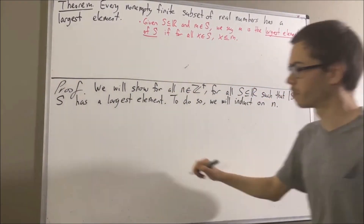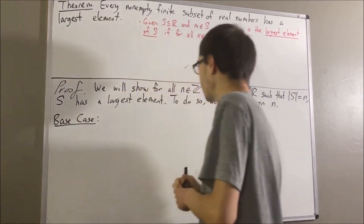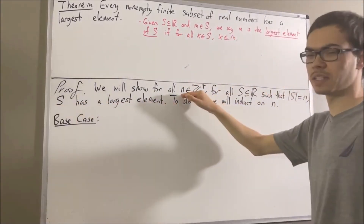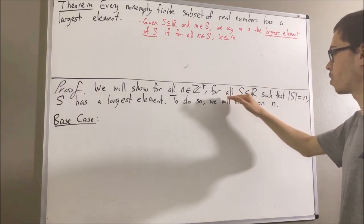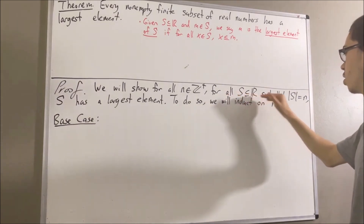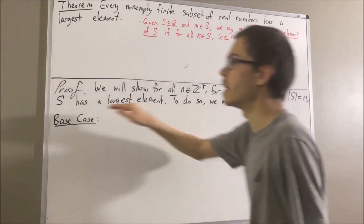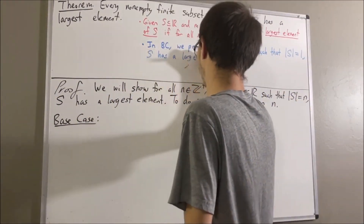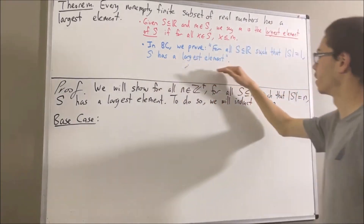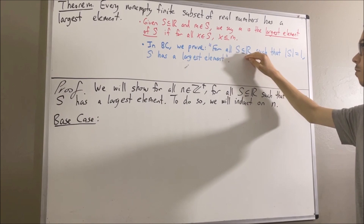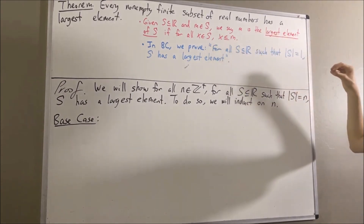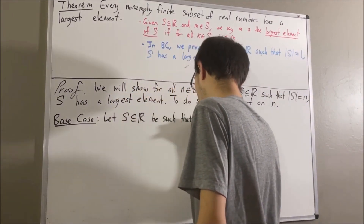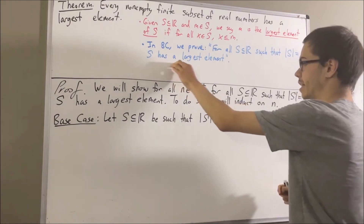Let's start with the base case. In the base case, we're trying to prove that this statement is true in the case where n is equal to 1, which means we're trying to prove that for all subsets of real numbers s where s has one element, s has a largest element. Since we're trying to prove a statement about every subset of real numbers that has one element, give me an arbitrary subset of real numbers that has one element — I'll call it s. Our whole goal is to prove that s has a largest element.